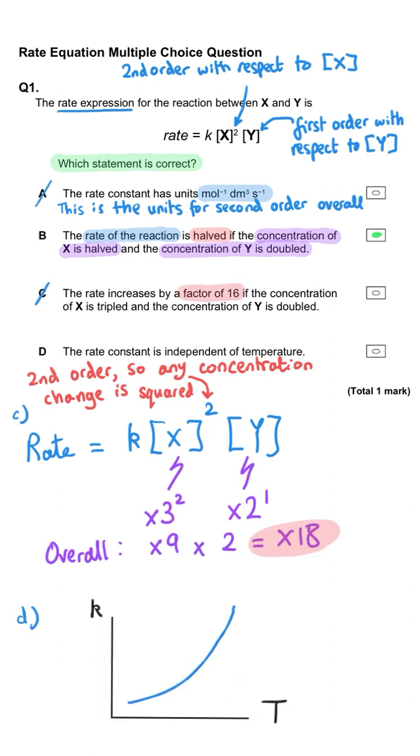C, the change would actually be 18 times faster, and K definitely depends on temperature.